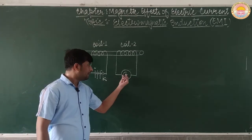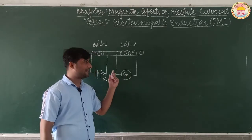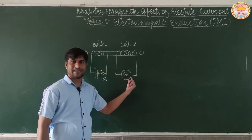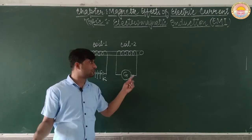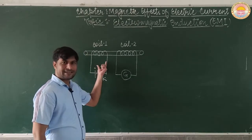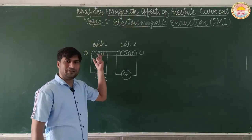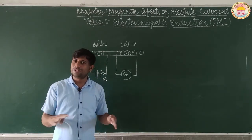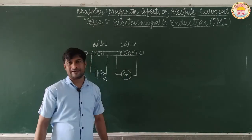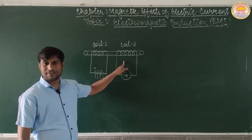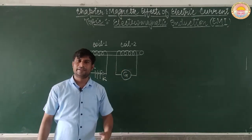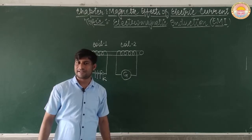When we continue passing current through the coil, we observe that there is no deflection in the galvanometer, meaning no electromagnetic induction is occurring. The reason is that the magnetic field that has been established is now constant — there is no change in the magnetic field around coil second. Since there is no change of magnetic field, no electromagnetic induction occurs in the secondary coil and no electric current is induced.